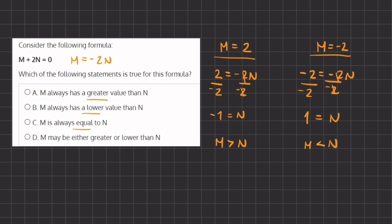Now if we take a look at our answers, m is not always greater than n because we saw in this case that when m is negative 2, then n is greater. That means we can cancel out option a.